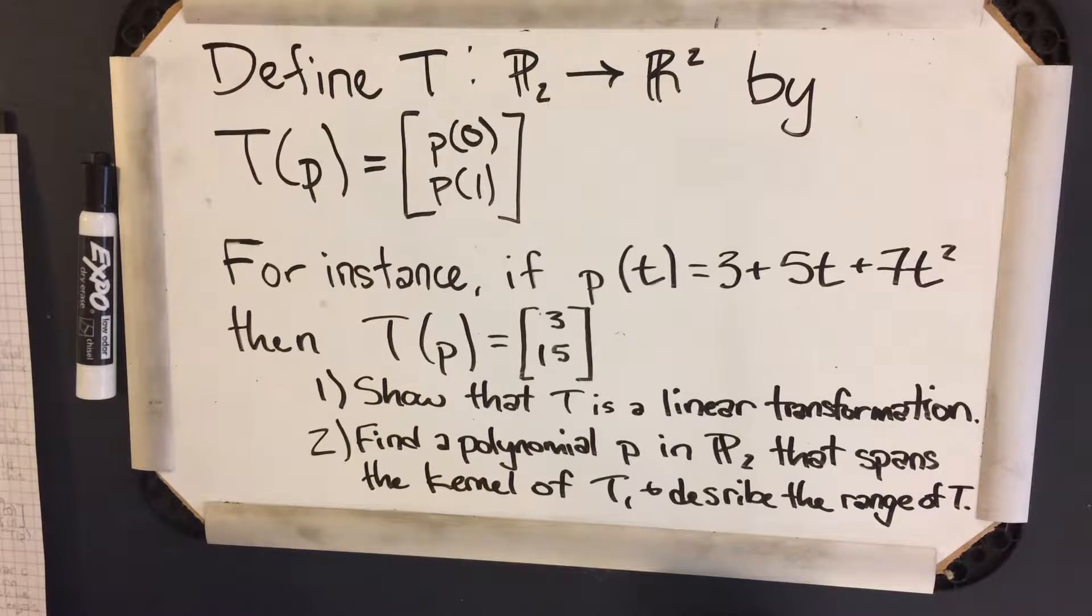The prompt for part A is as follows: Define T as P₂ to R² by T(p), which equals p(0), p(1).